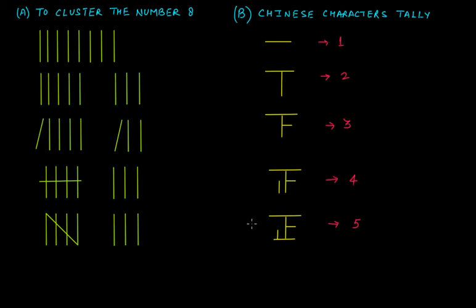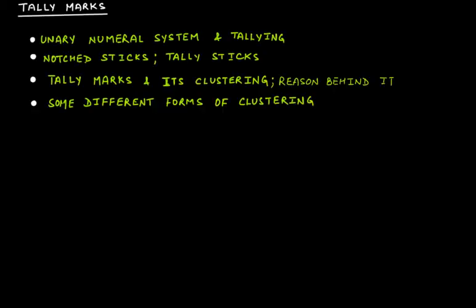That is all about tally marks that we wanted to discuss. This was a theoretical portion covering a little bit of history, why we use tally marks, why we don't cluster in ten and instead prefer clustering in five, and some different forms of clustering. In the next video in this series, we will discuss the uses of tally marks in a frequency distribution table — how we record data, organize it in table form, and use tally marks there.